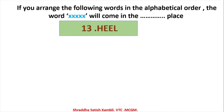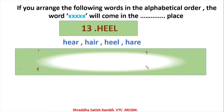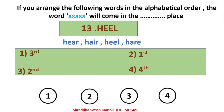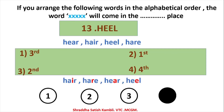Next example: the word is HEEL (H-E-E-L). The list has HEAR (H-E-A-R), HAIR (H-A-I-R), HEEL, and HARE (H-A-R-E). Arranging alphabetically: HAIR first, HARE second, HEAR third, HEEL fourth. The second letter of HAIR and HARE is A — comes before E in HEAR and HEEL. Between HAIR and HARE, third letter I versus R — I comes before R. Between HEAR and HEEL, third letter A versus E — A comes before E. So HEEL comes in the fourth place.